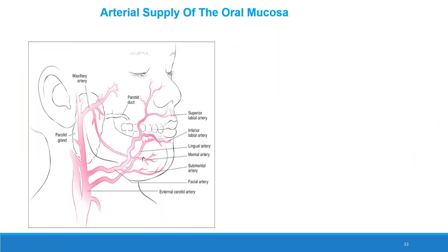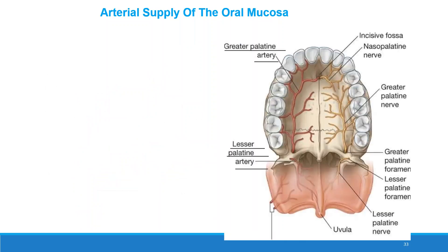Arterial supply of the mucosa. The upper lip is supplied by the superior labial artery. The lower lip is supplied by the inferior labial artery. The floor of the mouth is supplied by the sublingual artery. The cheek is supplied by the buccal, infraorbital, and posterior superior alveolar arteries. The hard palate is supplied by the major palatine, nasopalatine, and sphenopalatine arteries. The soft palate is supplied by the minor palatine artery. The anterior two-thirds of the tongue is supplied by the deep lingual artery, and the posterior one-third by the dorsal lingual artery.